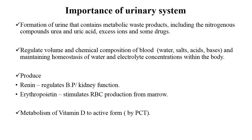Another important function of the urinary system is the production of renin. Renin is an enzyme produced from the kidney that regulates the blood pressure of the body — its concentration increases and decreases to maintain blood pressure. Another important enzyme produced from the kidney is erythropoietin, which stimulates the production of red blood cells from the bone marrow.